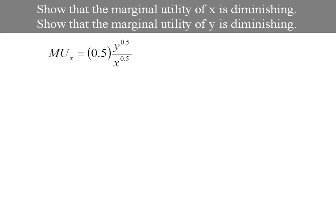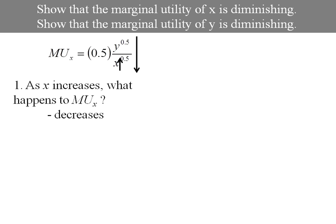So here's my marginal utility of x. As I increase x what happens to marginal utility? I like to do this with arrows. So I put a little arrow in the denominator where my x is. If x is getting bigger, well it's in the denominator so my whole expression must be getting smaller. So as x increases the marginal utility of x decreases.